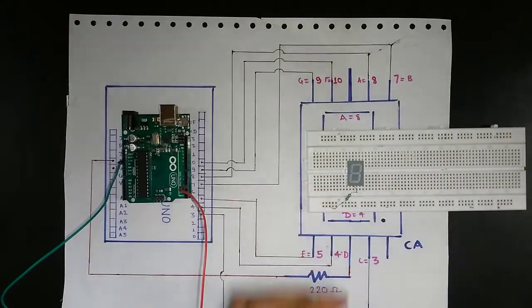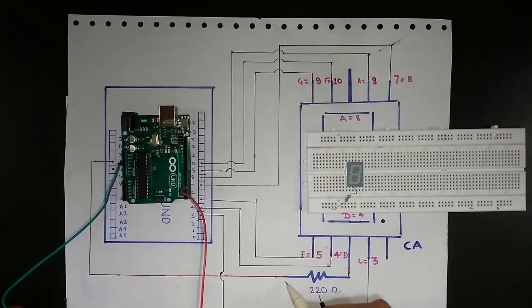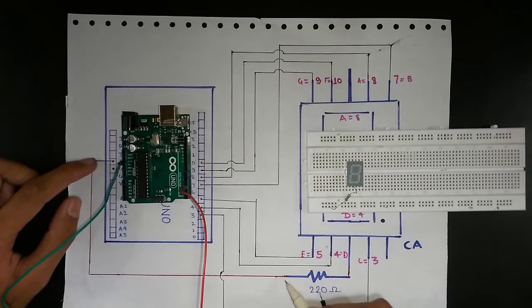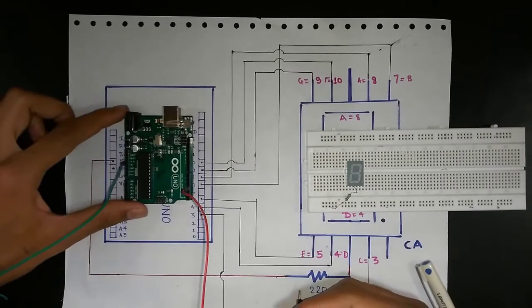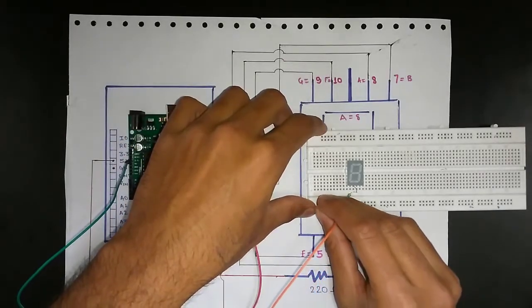Now moving on, the other terminal of 220 ohm resistance is connected to plus 5 volts. So connect the plus 5 volts to the second terminal of the resistance.